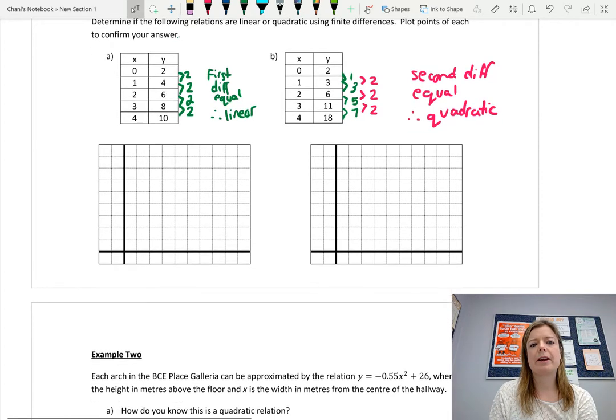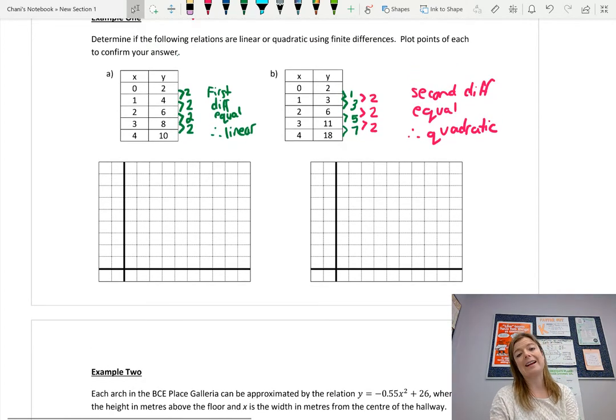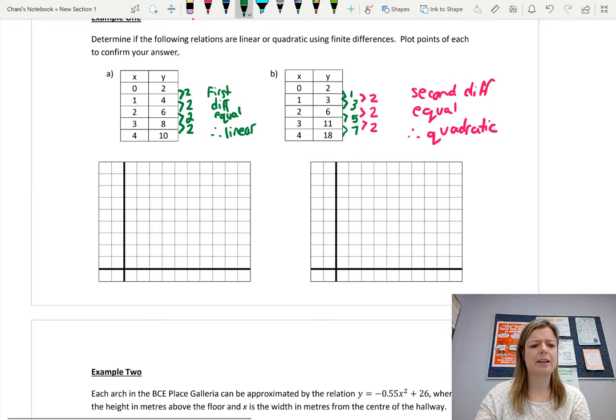So I already kind of started example one here by checking the finite differences. Finite differences just means first and second. Or later on in further grades, we'll go on to third differences and things like that. So let's plot the points to confirm that this is actually linear, and that the second one is quadratic. So zero, two is here. One, four is here. Two, six is here. Three, eight is here. So clearly, this is linear. It creates a straight line when graphed.